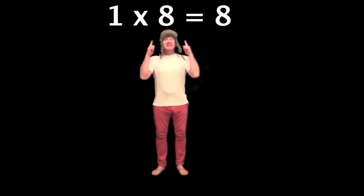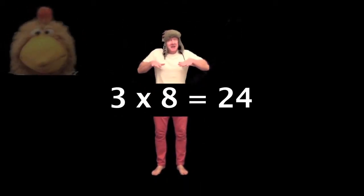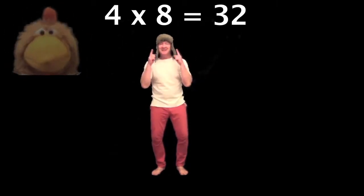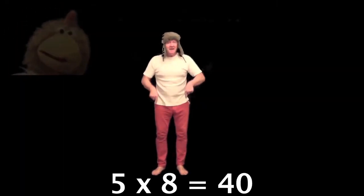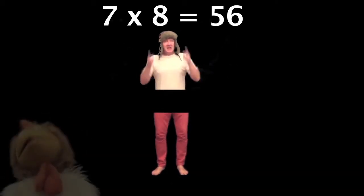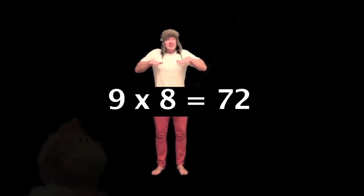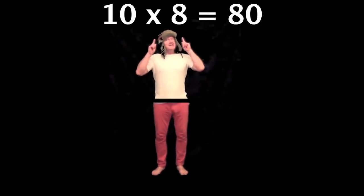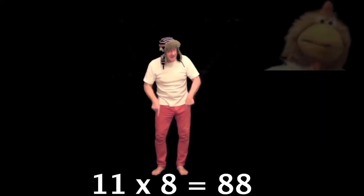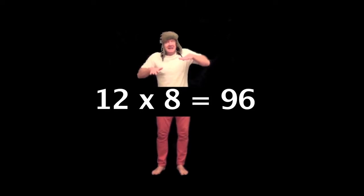1 times 8 is 8, 2 times 8 is 16, 3 times 8 is 24, 4 times 8 is 32, 5 times 8 is 40, 6 times 8 is 48, 7 times 8 is 56, 8 times 8 is 64, 9 times 8 is 72, 10 times 8 is 80, 11 times 8 is 88, 12 times 8 is 96.